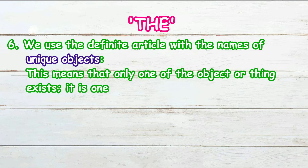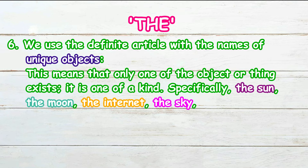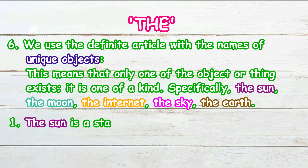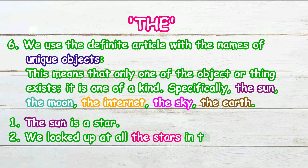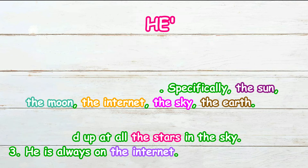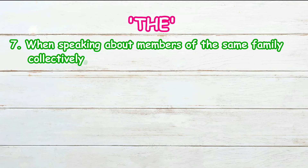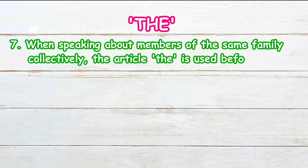We use the definite article with the names of unique objects — this means that only one of the object or thing exists; it is one of a kind. Specifically: the Sun, the Moon, the Internet, the sky, the Earth. For example: 'The Sun is a star,' or 'We looked up at all the stars in the sky,' or 'He is always on the internet.'